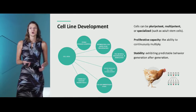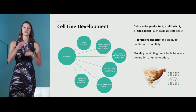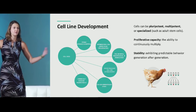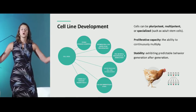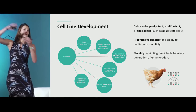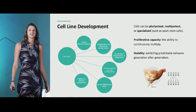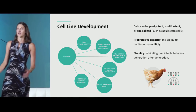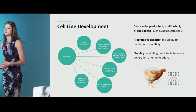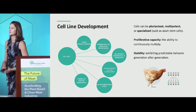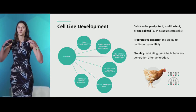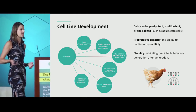Proliferative capacity is another important term — it simply means how many times you can get these cells to double, divide, and reproduce. In a large-scale system capitalizing on the high end of that exponential curve, every additional doubling has significant economic impact. Stability refers to the ability to have cells that perform in a predictable way, generation after generation, batch after batch, so you can build a robust industrial-scale process around this.